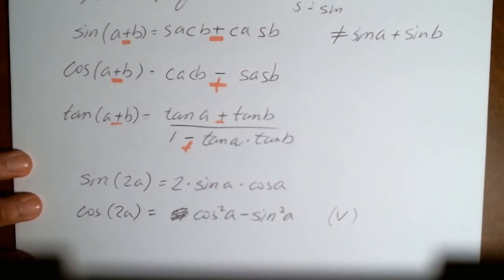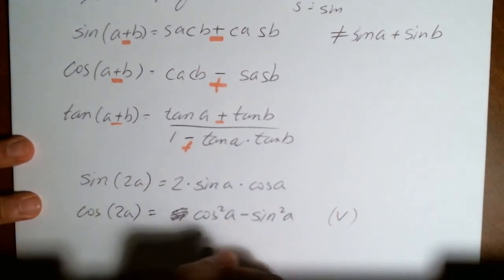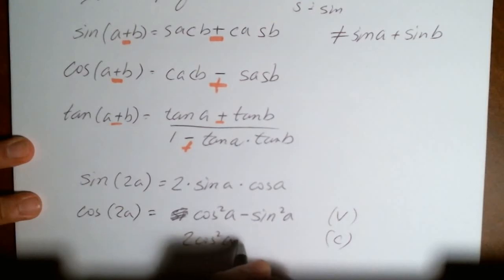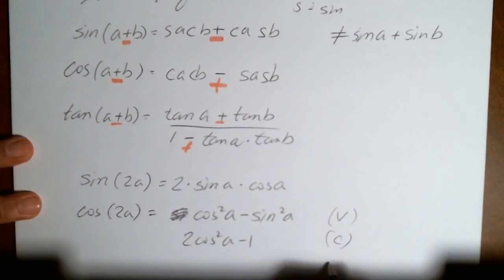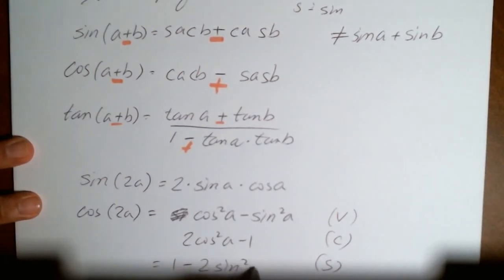It comes in three flavors. Vanilla, that's the one everybody loves vanilla. And then chocolate, which is C, 2 cosine squared of A minus 1. And strawberry is equal to 1 minus 2 sine squared of A.